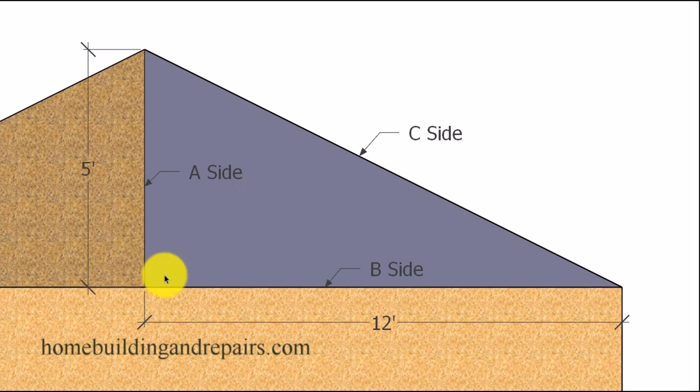And this means that for every 12 inches or every 12 feet, that the rise is going to go up 5 feet for 12 feet. And if it's a 1 foot increment, then it's going to go up 5 inches. So for every 1 foot, the rise is going to be 5 inches.